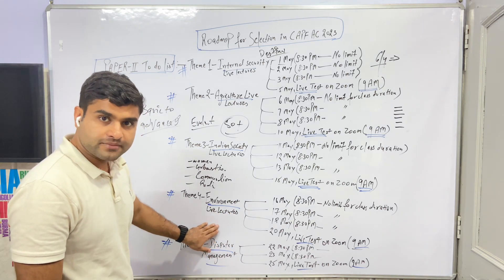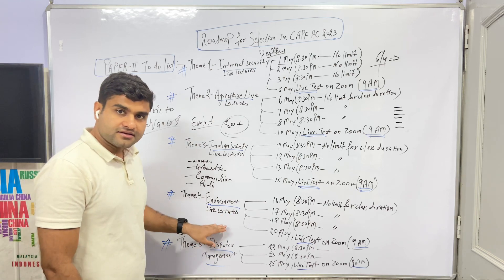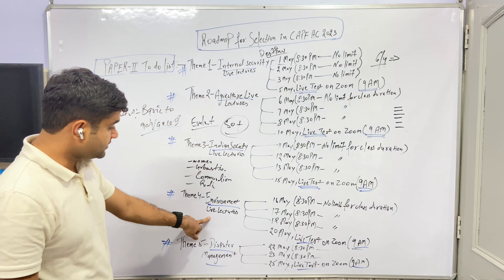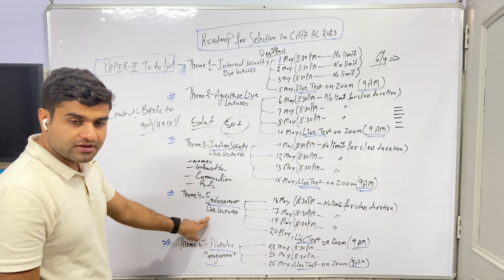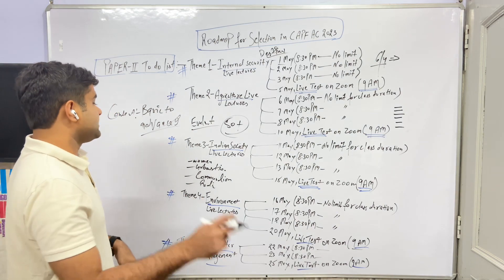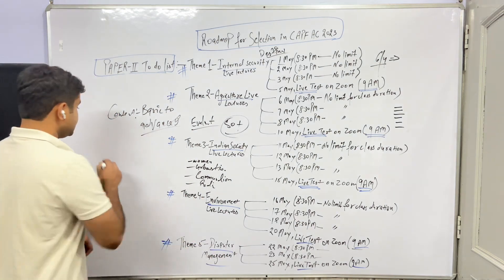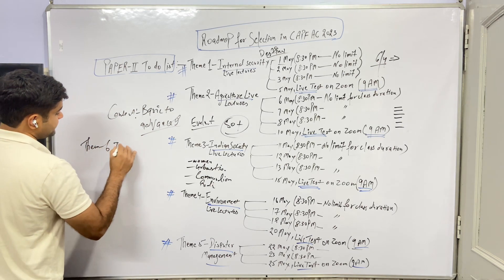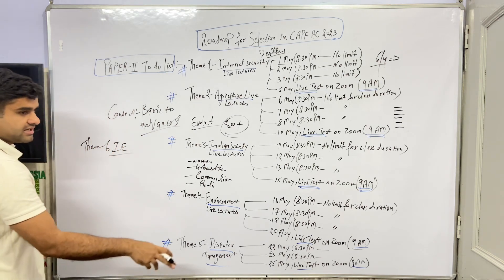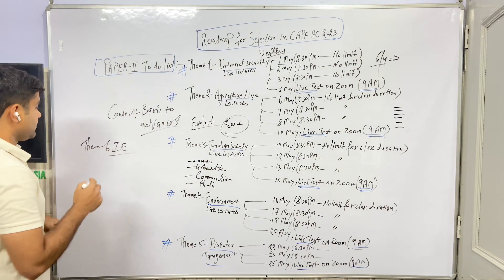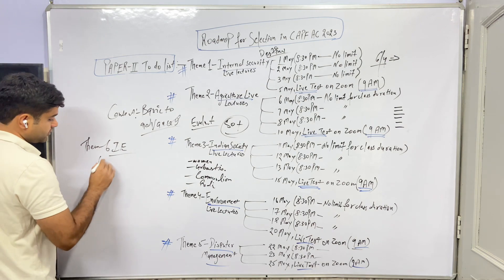Interlinking river project - what impact on environment? You will prepare that. In this way we approach theme number 6 which is Indian Economy. I think 2020 or 2021 the topic was unemployment and new education policy. How do you comment?